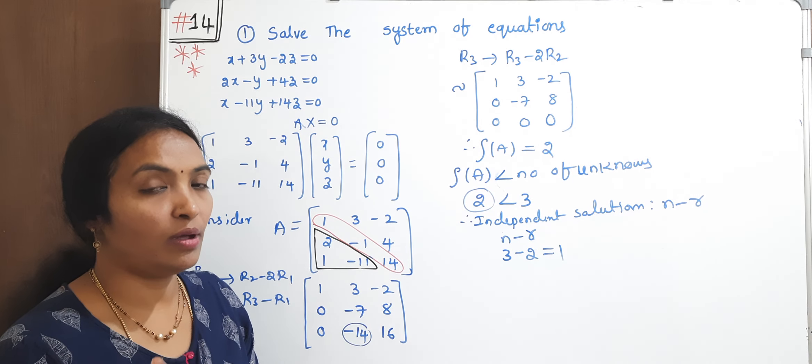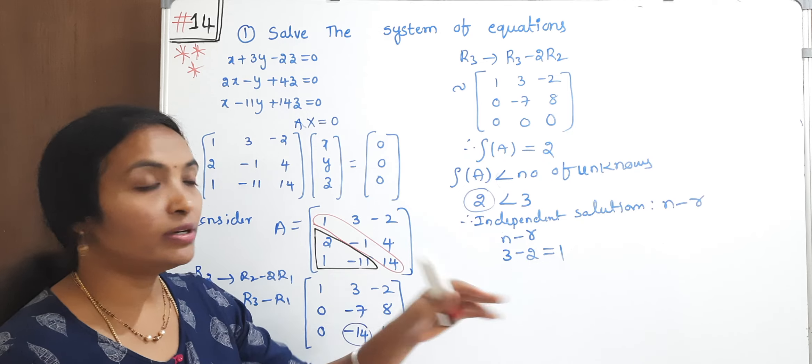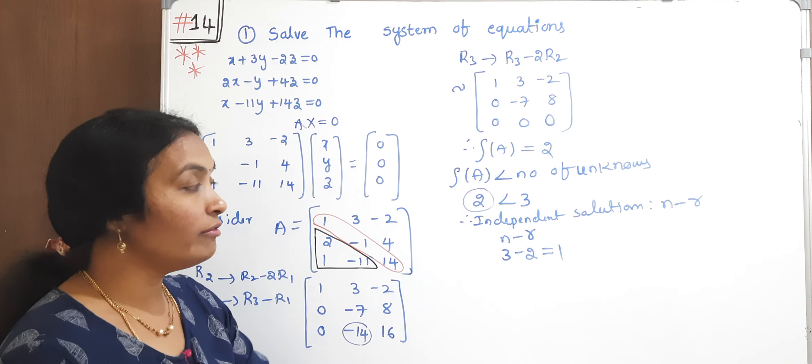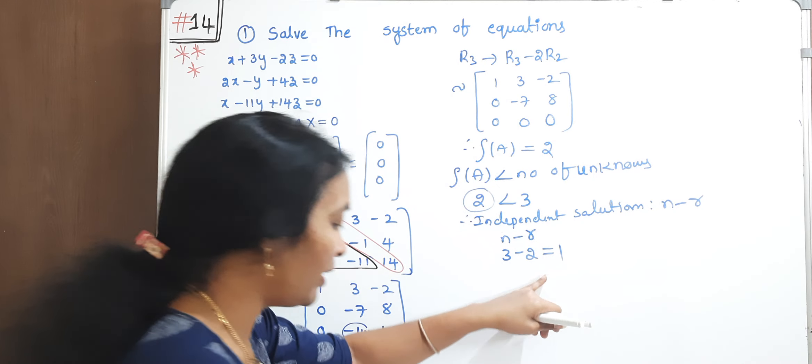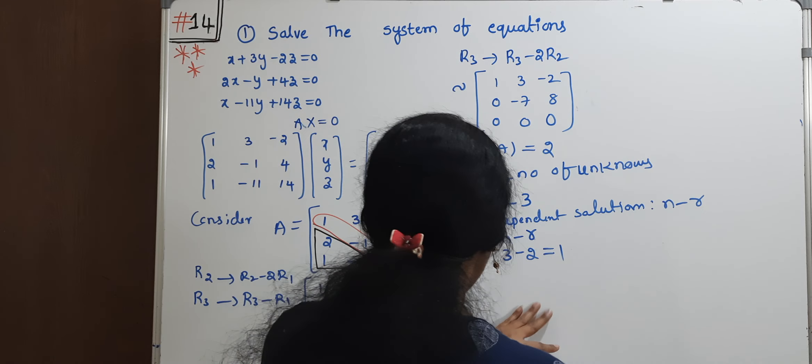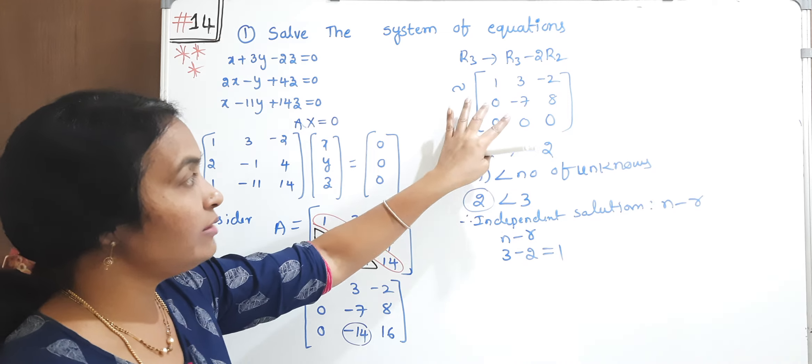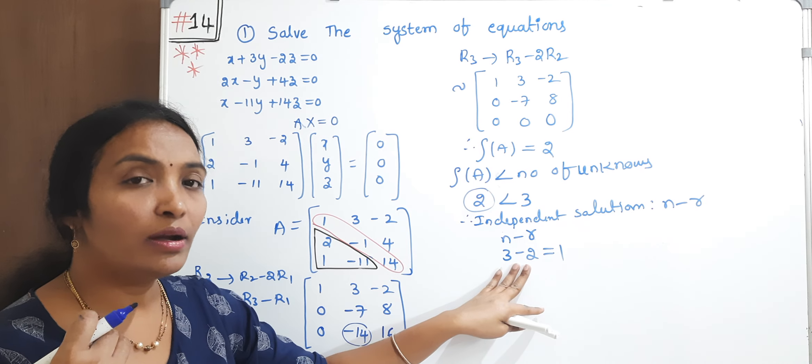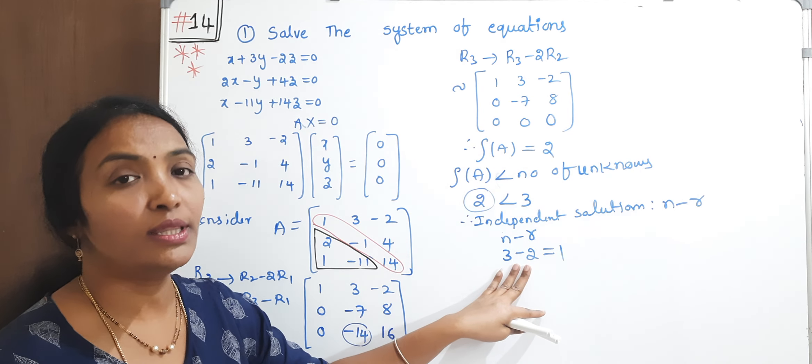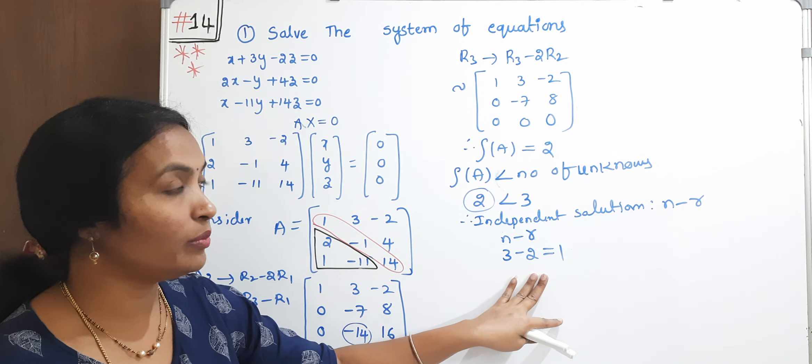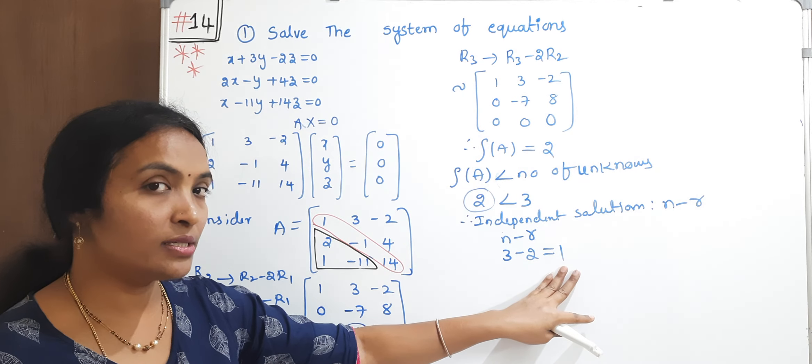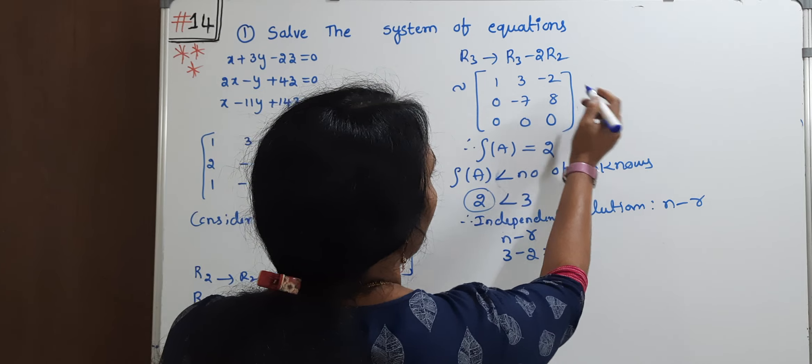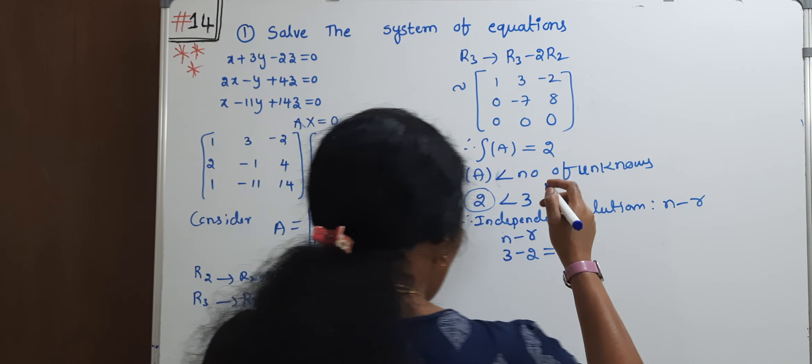You have to remember, if all unknowns equal 0, that is trivial solution. This system is non-trivial. For non-trivial, we have dependent-independent variables. If all the unknowns equal 0, zero solution, that is trivial solution. This is non-trivial.